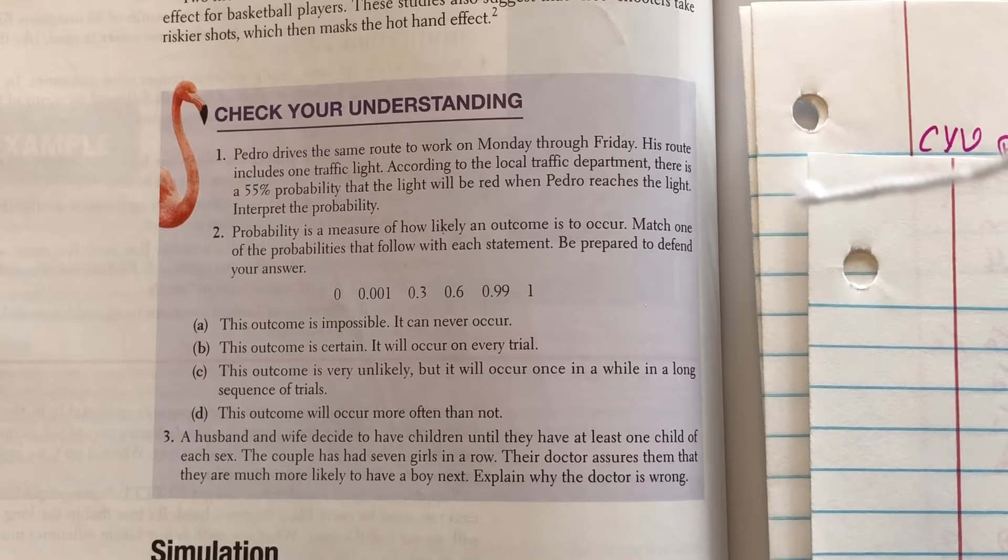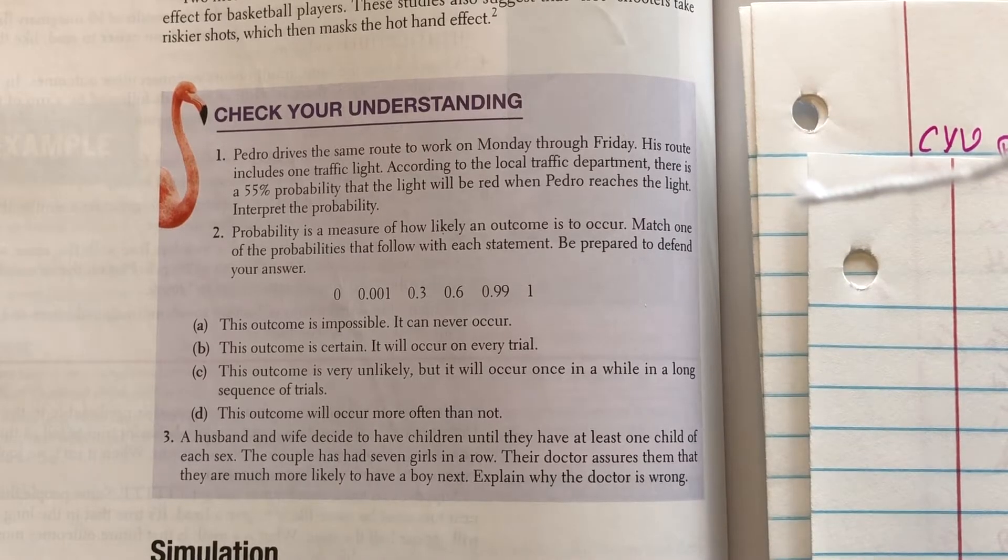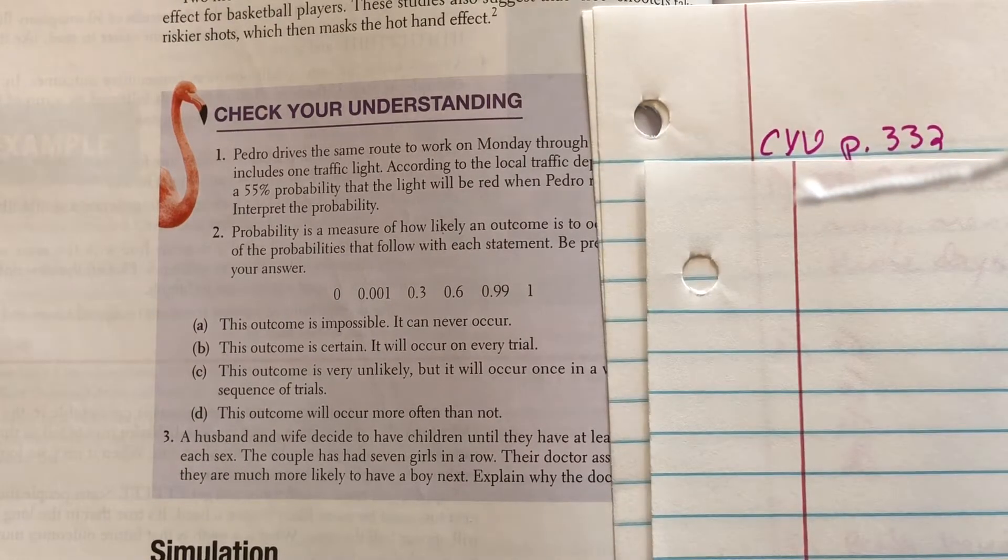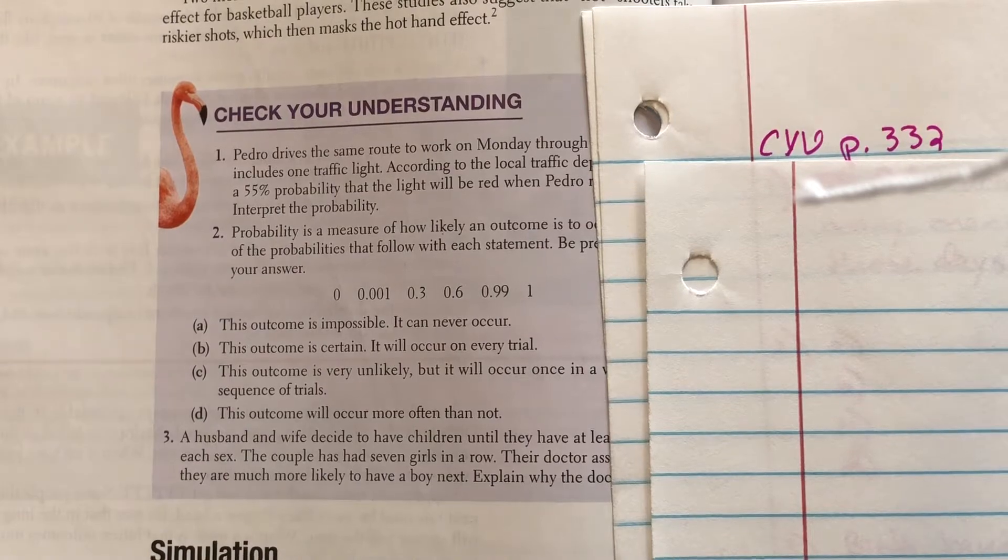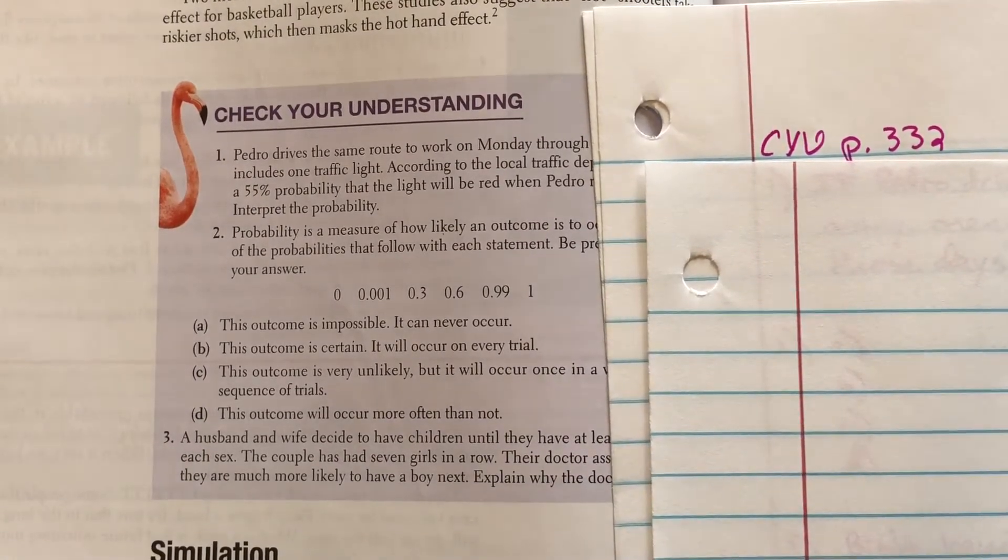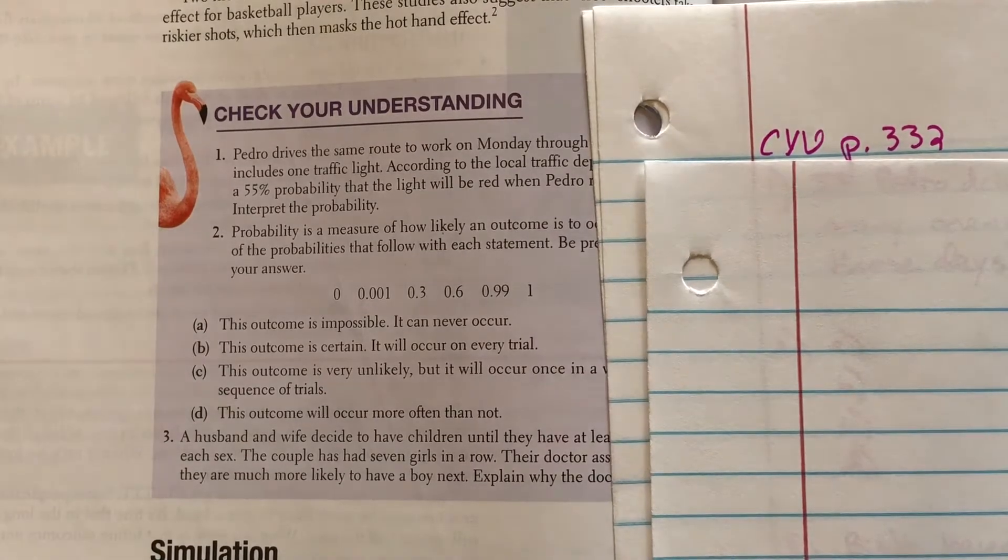Pedro drives the same route to work on Monday through Friday. His route includes one traffic light, and according to the local traffic department, there's a 55% probability that the light will be red when Pedro reaches the light. Let's interpret this probability. So remember the definition of probability. The definition of probability is that chance behavior is unpredictable in the short run and predictable in the long run, or it displays a pattern in the long run.